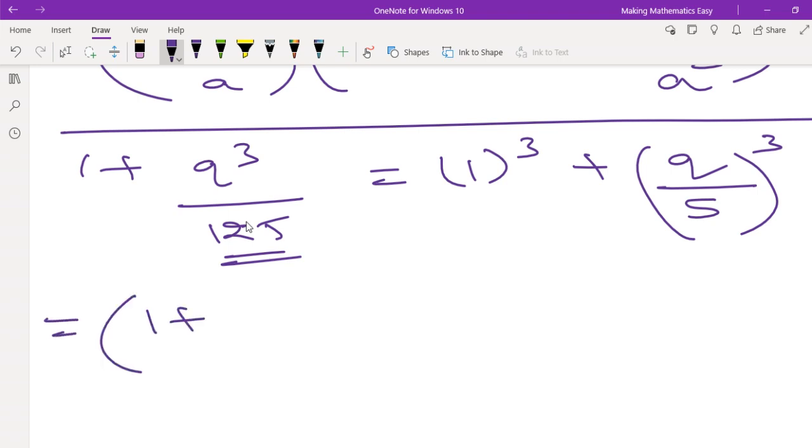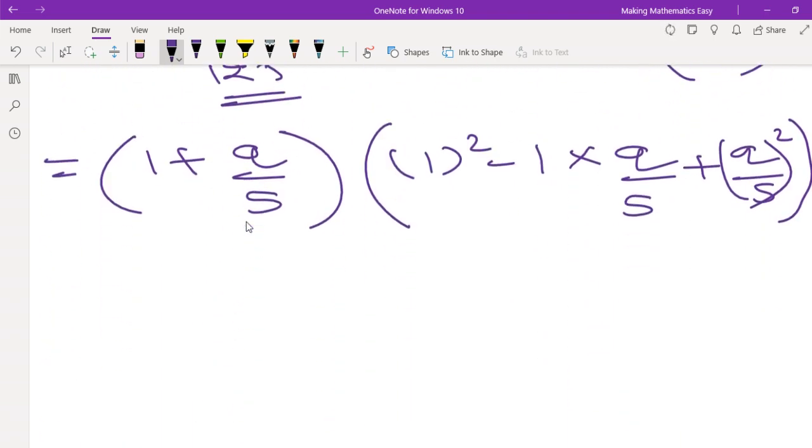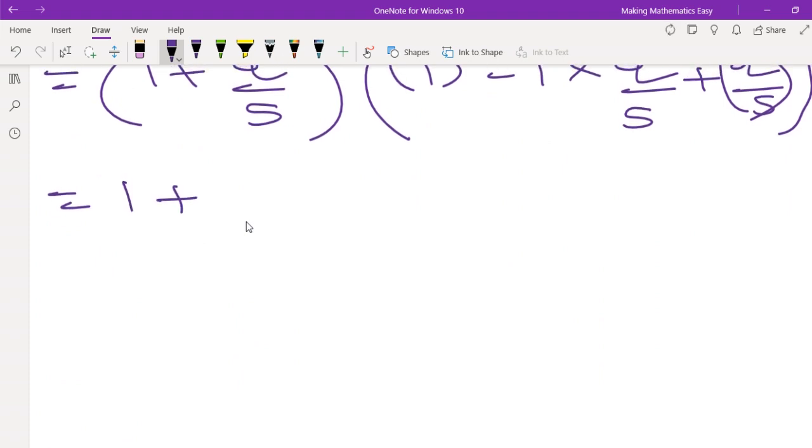So this will be a plus b, where a is 1 and b is q upon 5. The second bracket will be a square minus a into b plus b the whole square. Okay, let's move ahead. How to solve this? So this will be 1 upon q upon 5.